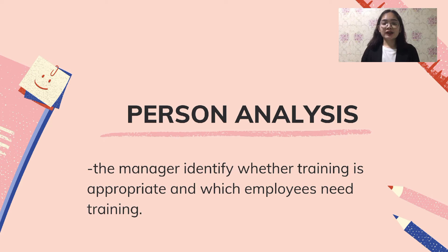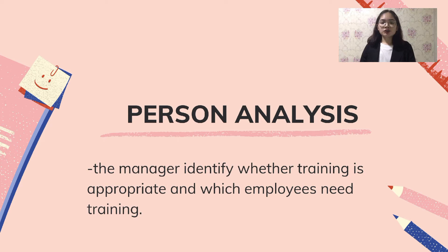Poor performance is indicated by customer complaints, low performance ratings, or on-the-job accidents or unsafe behavior. To determine if training is needed for a performance problem, you need to analyze characteristics of the performer — employees' knowledge, skills, ability, and attitudes. Input relates to the instructions that tell employees what, how, and when to perform, as well as resources such as equipment, time, or budget. Output refers to the job's performance standards. Consequences refers to the type of incentives that employees receive for performing well. Feedback refers to the information that employees receive while they are performing.